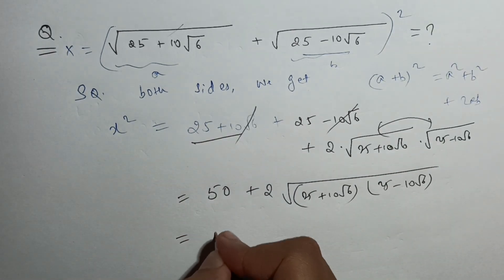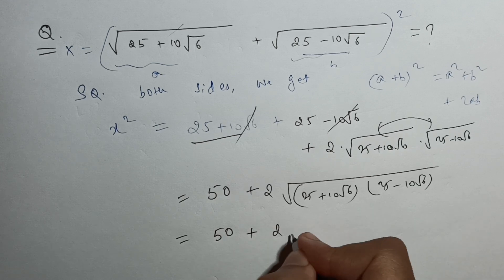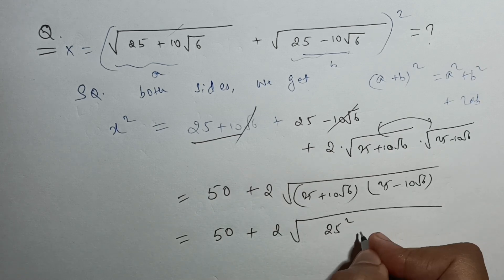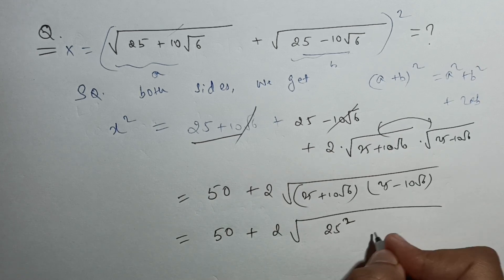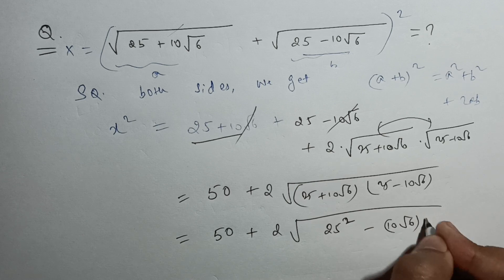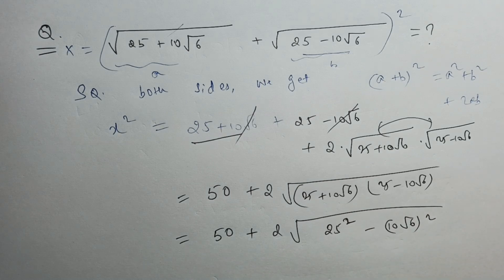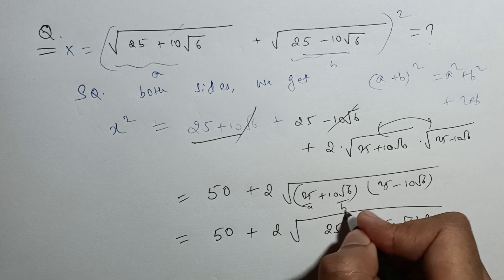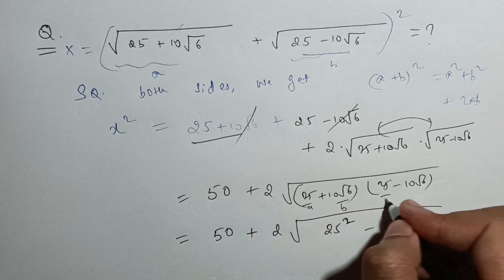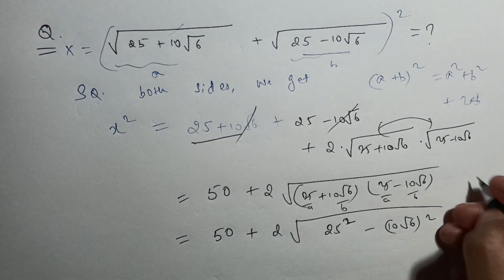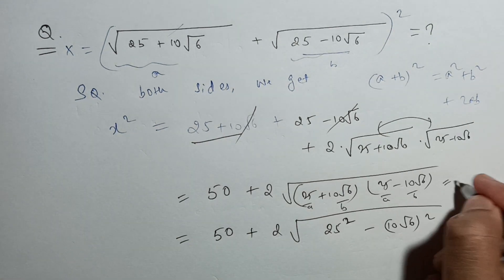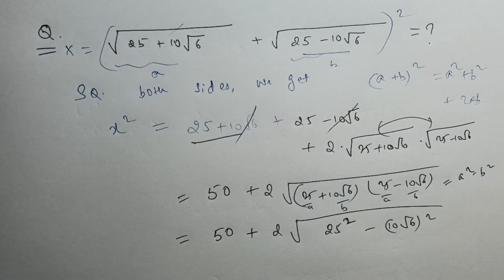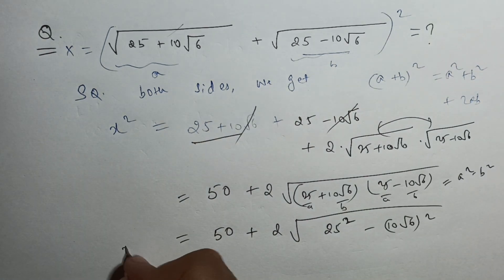From here we get 50 plus 2 times the square root of (25 + 10√6)(25 − 10√6). Using the formula (a + b)(a − b) = a² − b², that becomes 25² minus (10√6)². So this whole expression equals x².